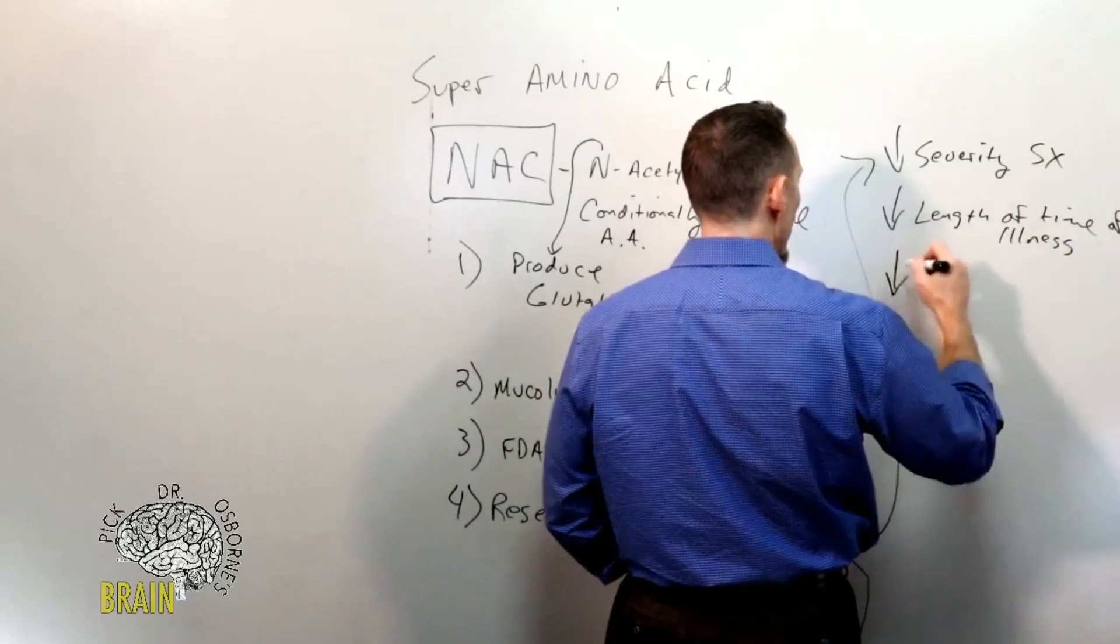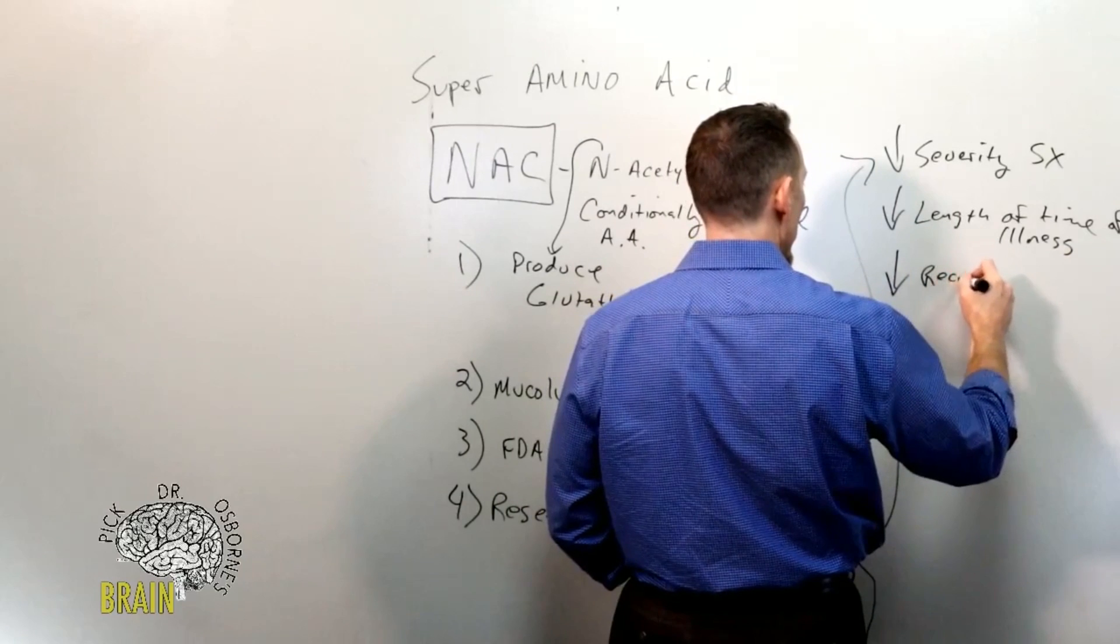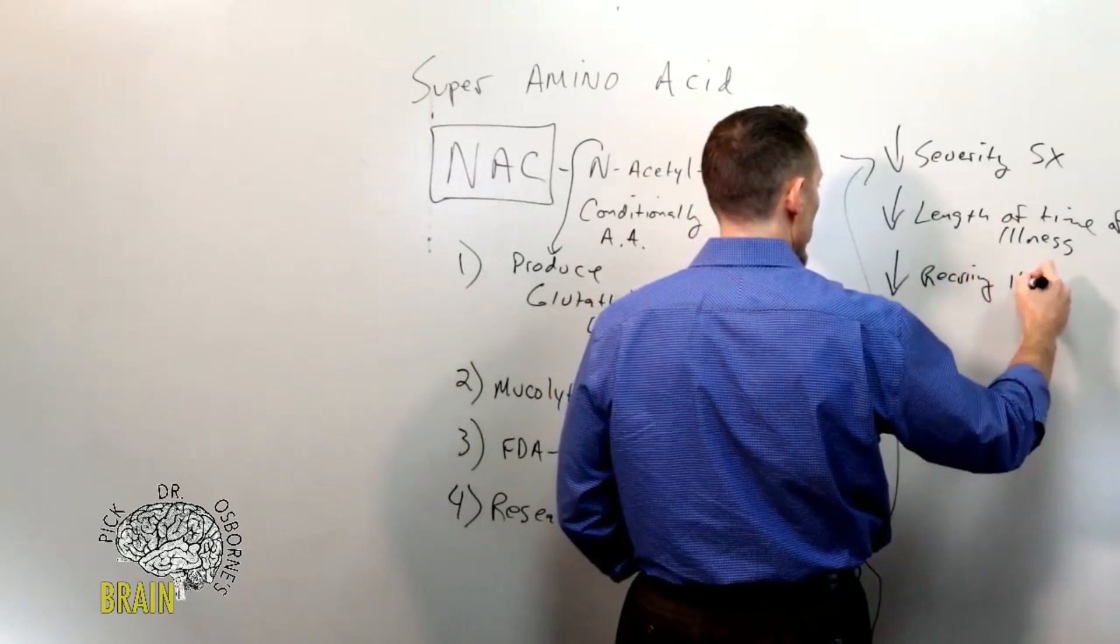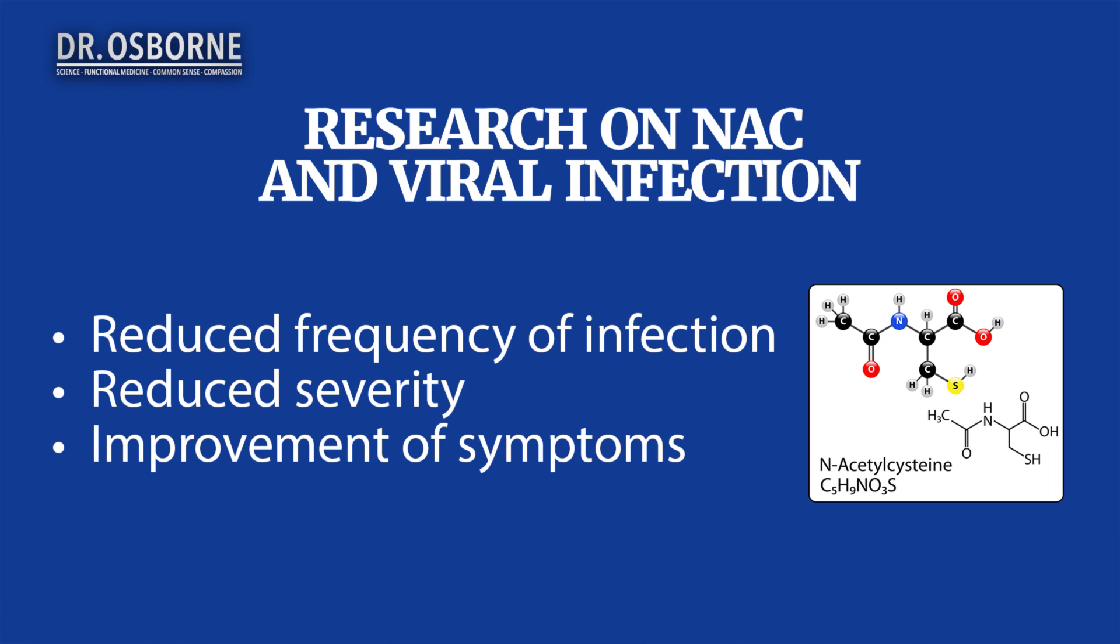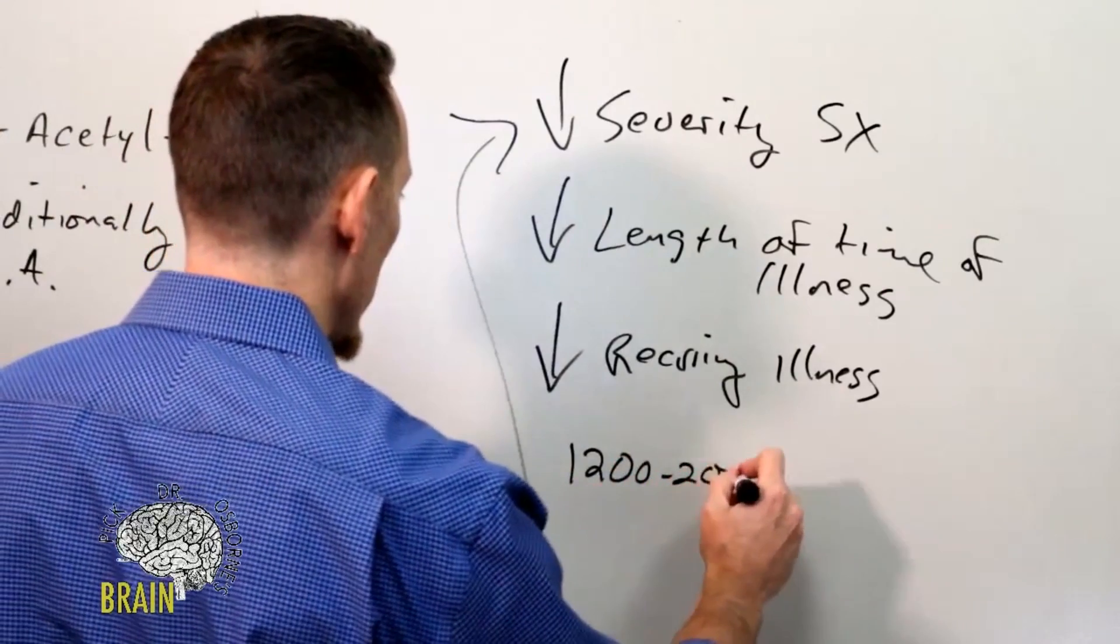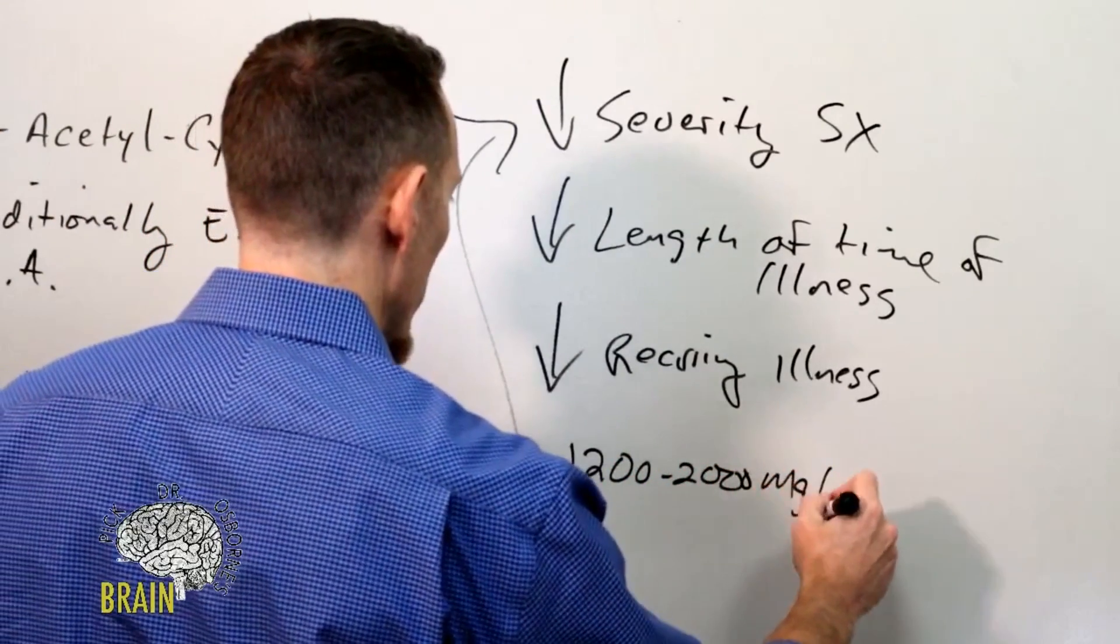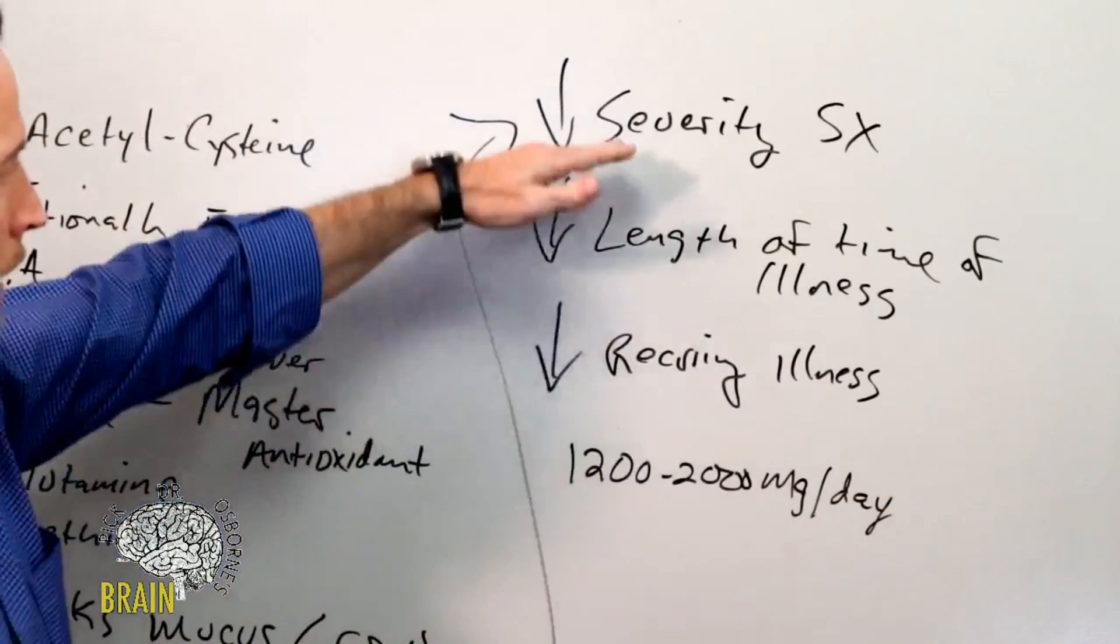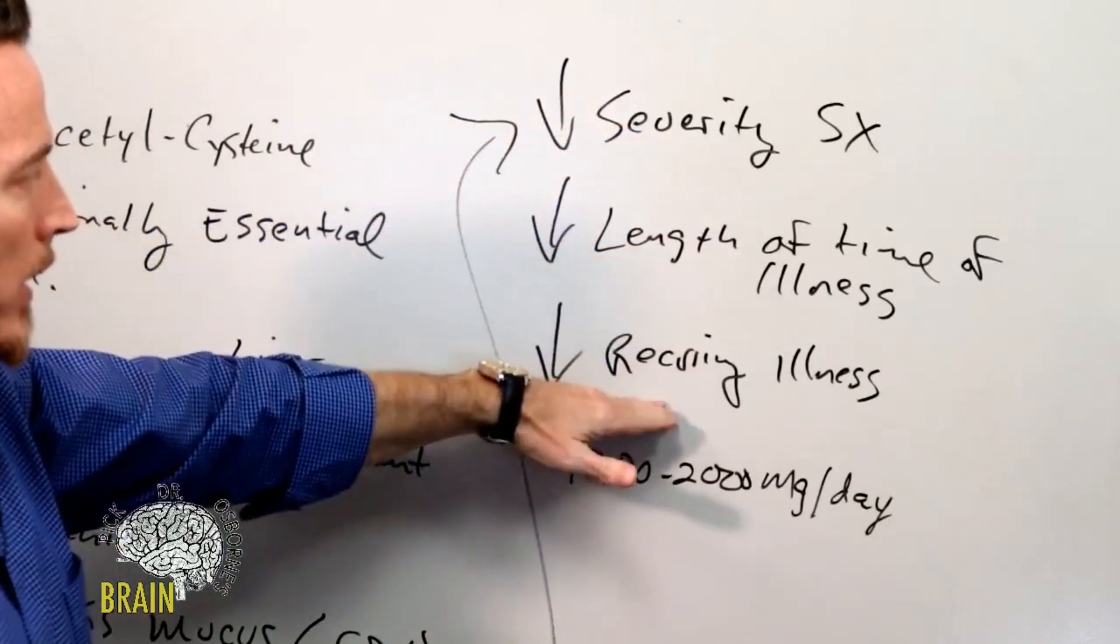It's also been shown to reduce recurring illness. So N-acetylcysteine reduces the severity of the symptoms, it can reduce the length of time that somebody actually spends being sick, and it can reduce the risk of them recapturing or re-catching the illness itself. So what is the dose? In the research studies, what's the dose that we're talking about here to do this? It's actually a pretty low dose - it's about 1200 to 2000 milligrams a day was the study dose that showed that this could work in all three areas.